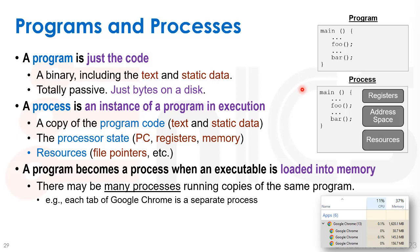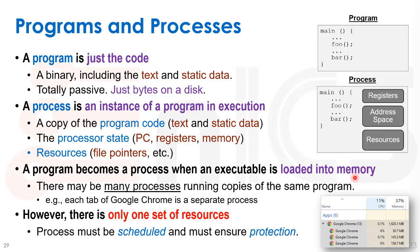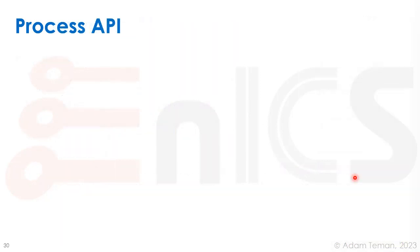We can have many processes running copies of the same program. Looking at a Windows process manager, Chrome can have many running processes — even more than the 13 shown — all instances of the same program, Google Chrome. However, there is only one set of resources and one CPU. On multi-core machines there are more, but abstractly we must schedule the processes onto these resources and ensure they're protected from each other so they don't overwrite each other's data.